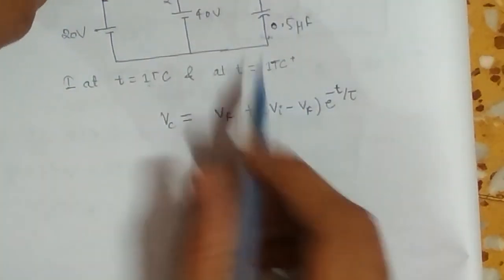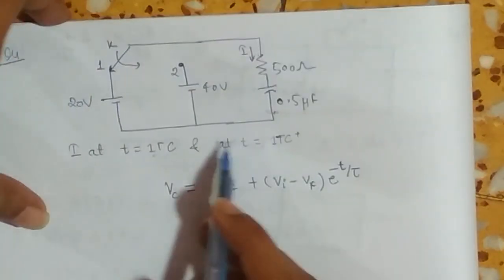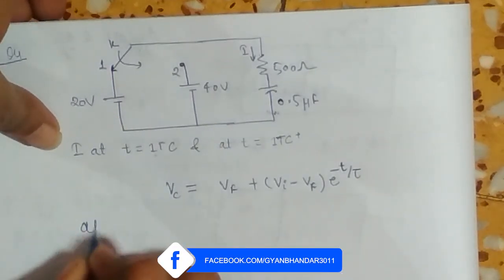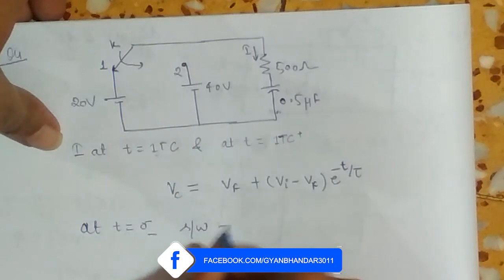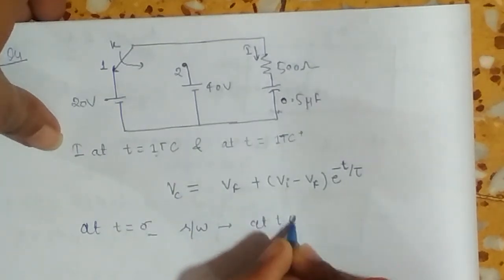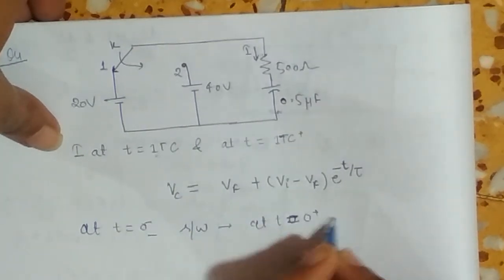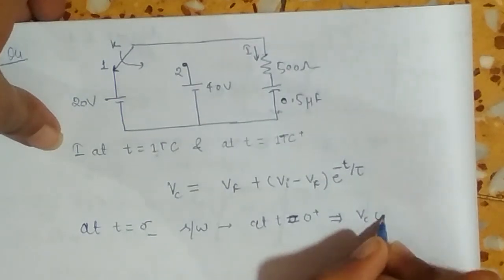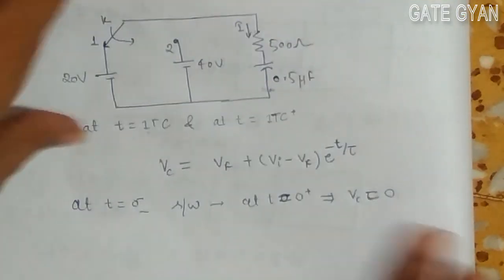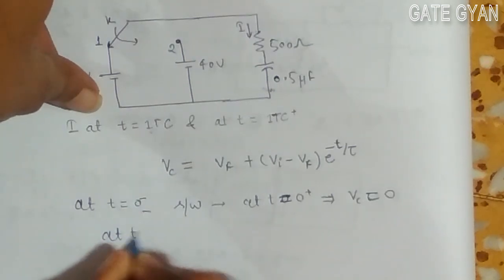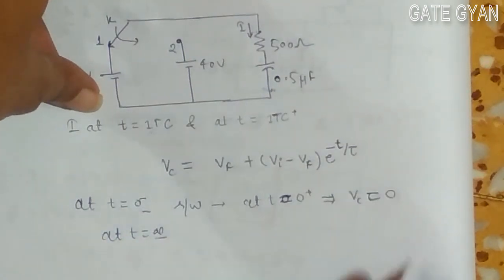Now I will get my final and initial value from this circuit. So at t equals 0 minus, switch is open. At t equals 0 plus, my vc will be 0.